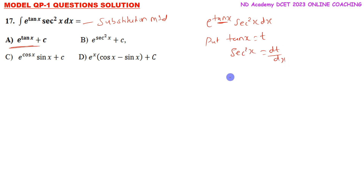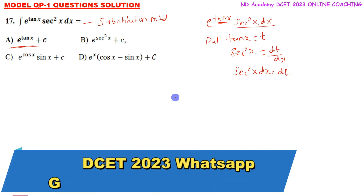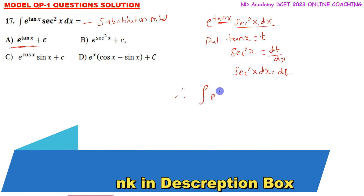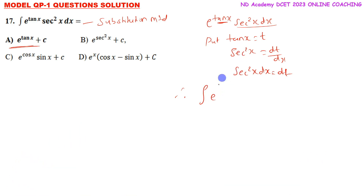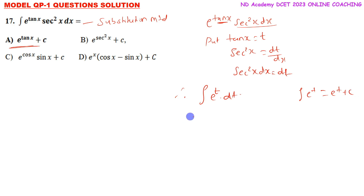So sec squared x dx is equal to dt. Now I can replace with dt. Therefore, integration of e to the power of tan x becomes integration of e to the power of t dt. We know that integration of e to the power of t is equal to e to the power of t plus C. Substituting back, since t equals tan x, the answer is e to the power of tan x plus C.